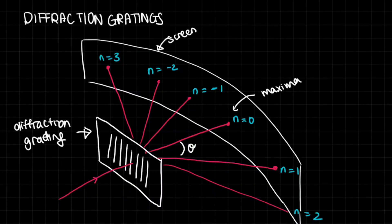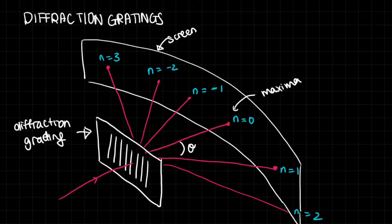In this video, we're going to talk about diffraction gratings — what happens if you pass light through some grating with a lot of slits, like thousands of them in a very, very small area, and then what happens as they disperse through light. You might have seen my previous video on the Young double slit experiment. If you haven't, I suggest you do, because it's very useful to compare the differences between diffraction gratings and the Young double slit experiment.